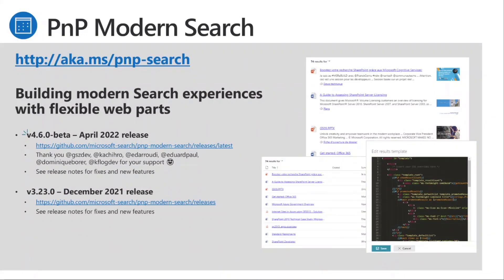Moving to Modern Search at aka.ms/pnp-search. PnP Modern Search 4.6.0 beta is out — that's going to be the April 2022 release. Thank you to all the folks that have contributed; everything in PnP continues to grow and get better thanks to your contributions. Check that out to see all the latest fixes and features. There's also the 3.23 branch, but that is not really getting updates — encourage you to move to the v4 stuff when you're able.